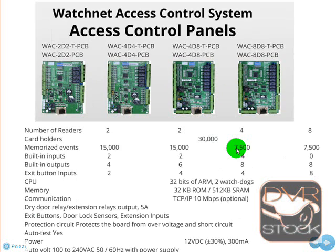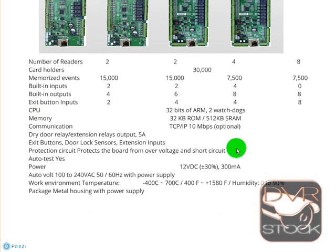So what's good about them? We have the number of readers — two, four, four, eight, and eight — up to 50,000 transactions on standalone memory. Inputs: two and four inputs, or extensions. Exit button sensors. For the IP model there is 32-bit memory.